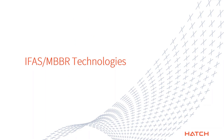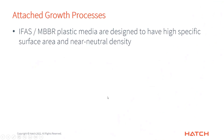Let's talk specifically about IFAS and MBBRs, which is what I'll cover for the rest of the webinar. It's a very popular technology — you have plastic media which can be added to existing tanks. These are designed to have a very high specific surface area so you can get a lot of room for biomass to grow in a small volume, and at near-neutral density so they can exist throughout the whole tank without sinking or floating.